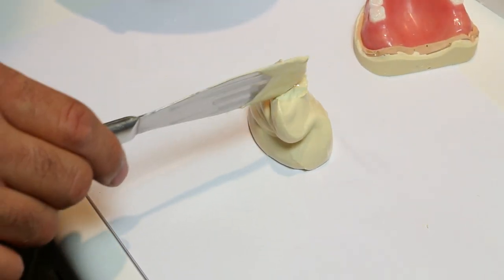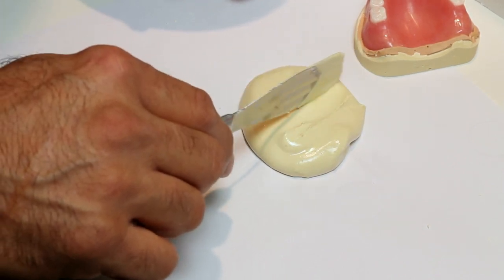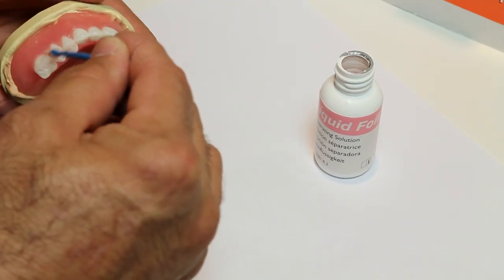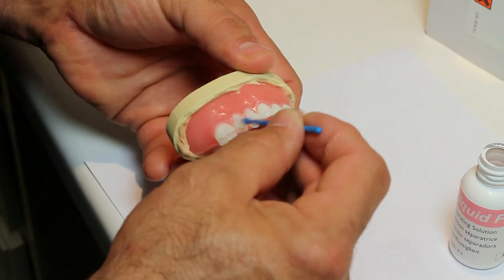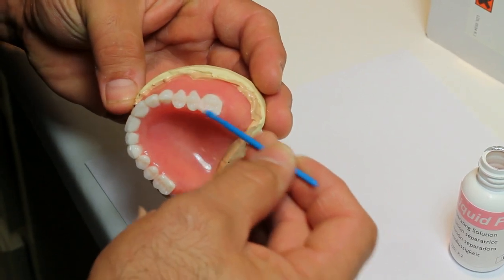With a separate pour, create a stone patty on the benchtop the size and relative shape of the denture's arch form. Note: Prior to placement, remember to lubricate the teeth with Lange's liquid foil for easy removal later.